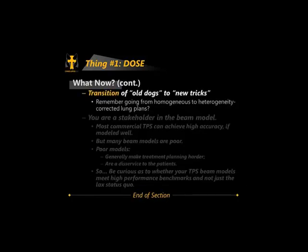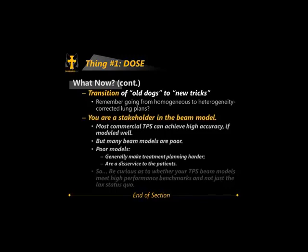Important practical applications: include the treatment table in your virtual patient model, especially for VMAT and rotational therapy where beams come up through the bottom of the table. Also consider the bolus effect of immobilization devices — they can perturb dose. With this knowledge you can help transition 'old dogs to new tricks' — for example, helping physicians understand the difference when moving from homogeneous to heterogeneity-based corrections for lung plans.